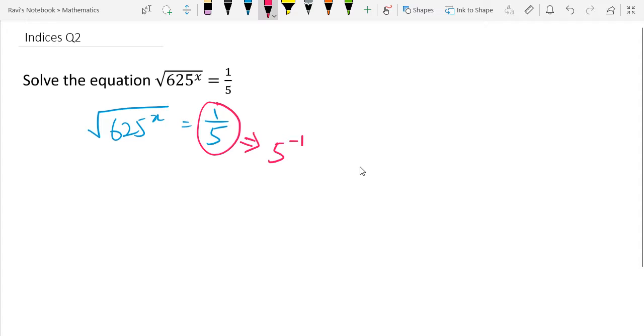That is the indices rule that says a to the power of n is equals to 1 over a to the power of minus n. So that is your indices rule that is being applied here.